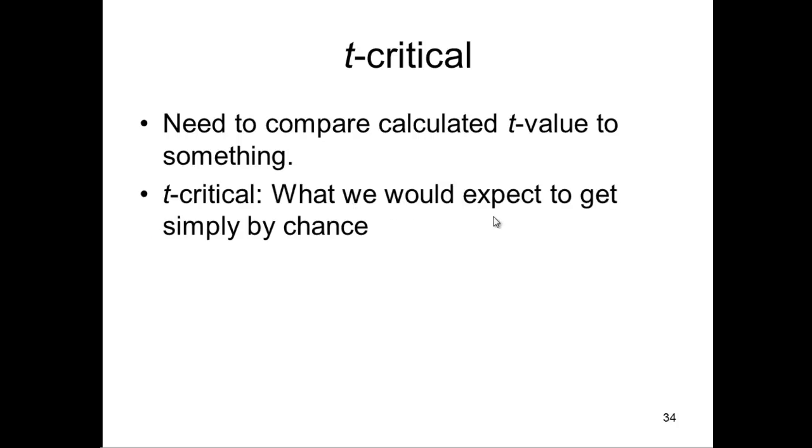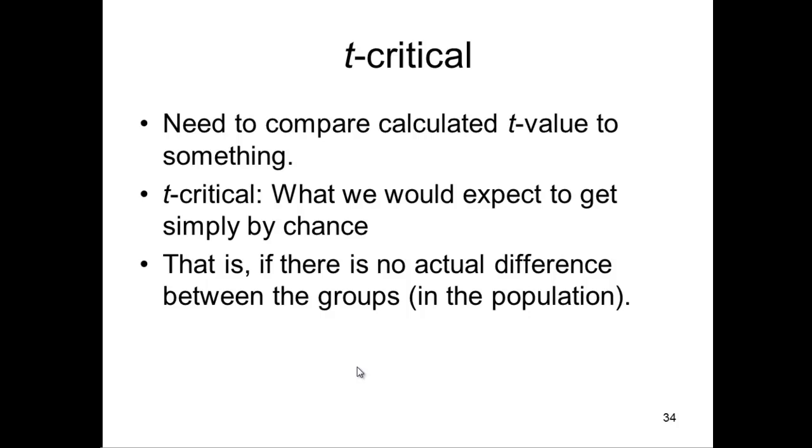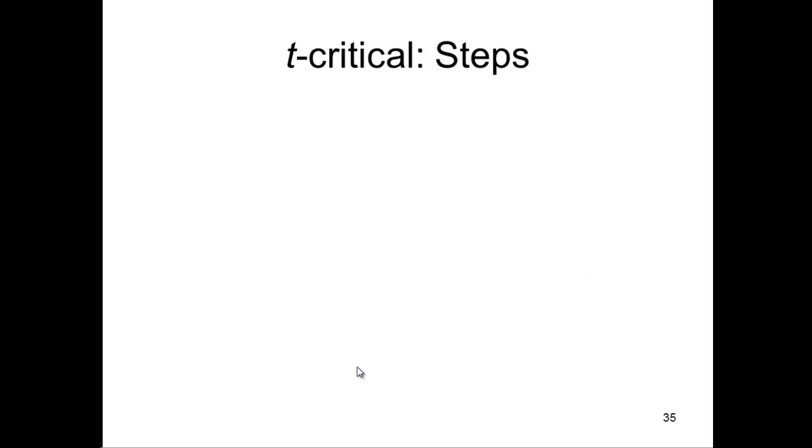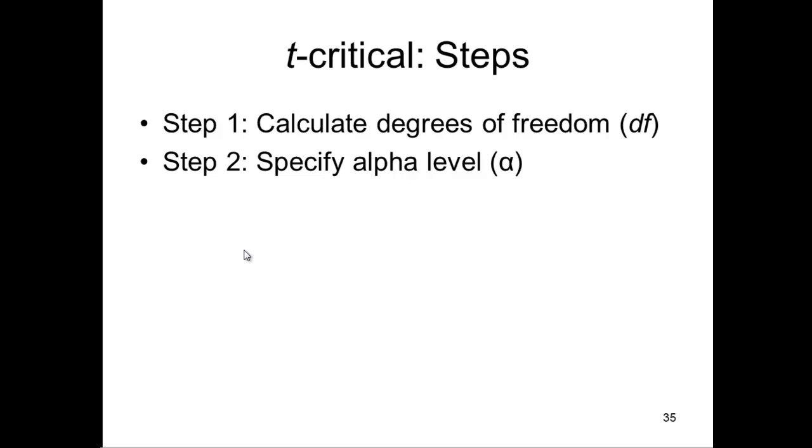So, t-critical, what we expect to get simply by chance. We don't want to fool ourselves into thinking there's a difference between two groups when really, at the population, there isn't. So, t-critical steps. You need to calculate the degrees of freedom in order to get the critical t-value. And you need to specify the alpha level. And almost always, the alpha level is specified at 0.05.